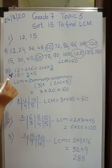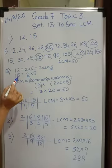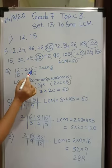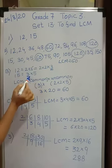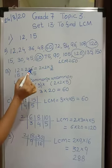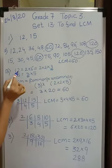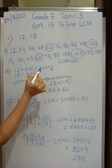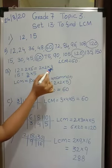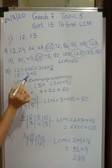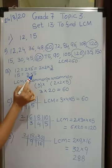Now look at Method B, using 12 and 15. What do I do? I break up 12: 12 is 2 into 6, and 6 can be written as 2 into 3. This is prime factorization. So 12 is 2 × 2 × 3. How can I write 15? 15 is 3 × 5.